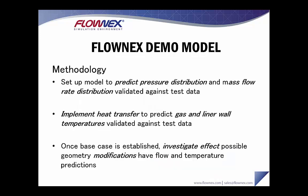The methodology for setting up a Flownex model is to first predict pressure distribution and mass flow rate distribution and validate that against test data. Then one would implement heat transfer to that cold flow model to predict gas and liner wall temperatures and again validate those results against test or CFD data. Once the base case is established, the effects of possible geometry modifications can be investigated to see how they affect both flow and temperature.